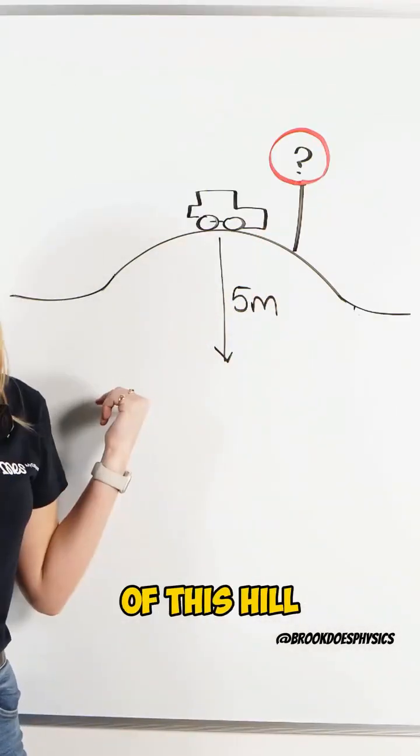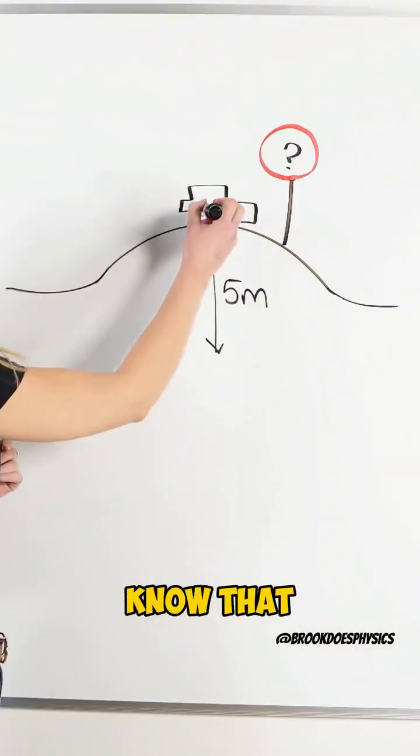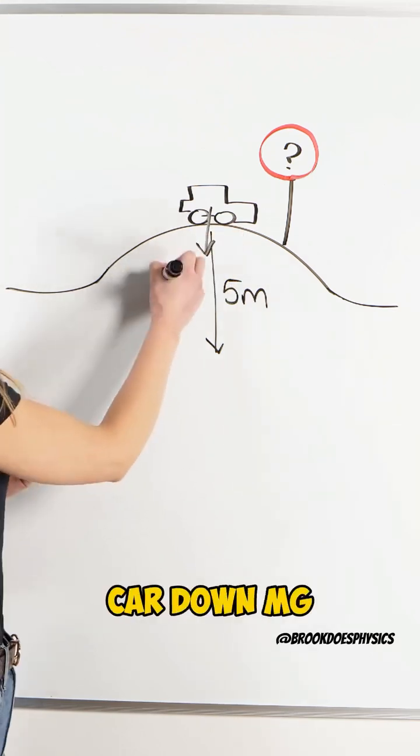Can you calculate the speed limit of this hill? So the math that we do is we know that there's a force of gravity pulling the car down, mg,